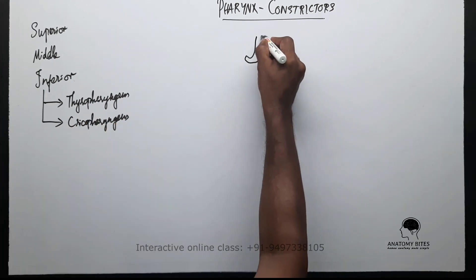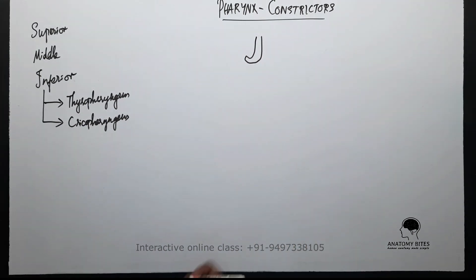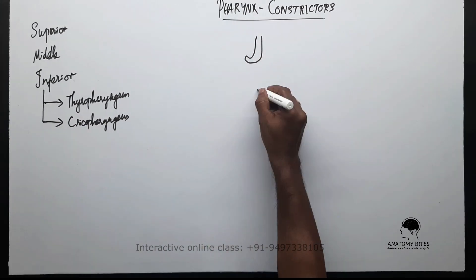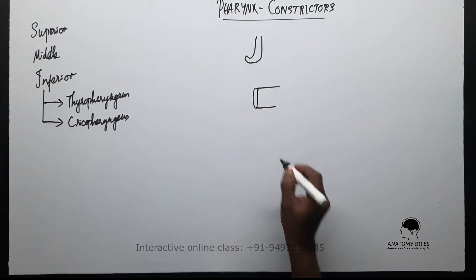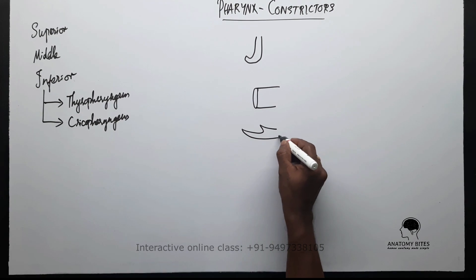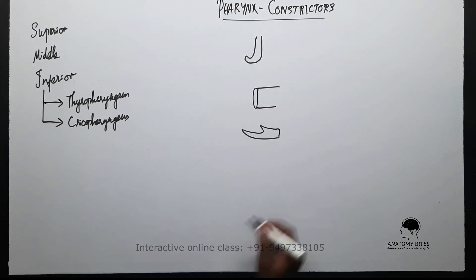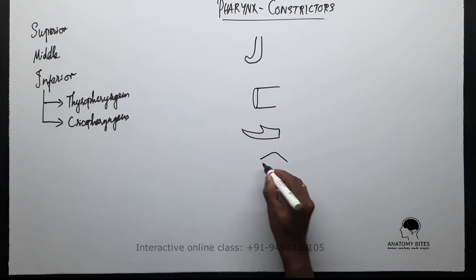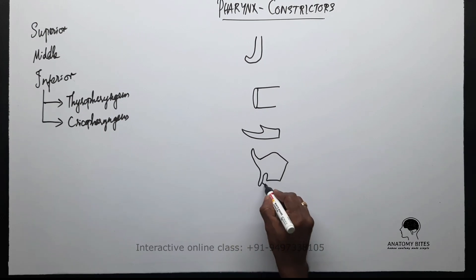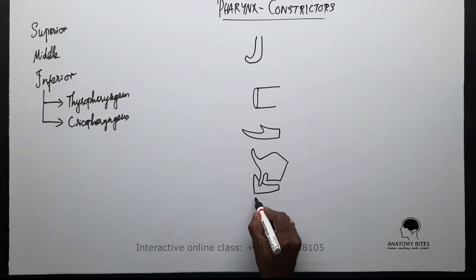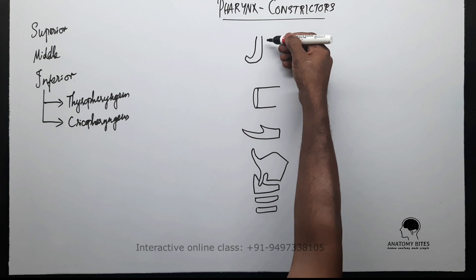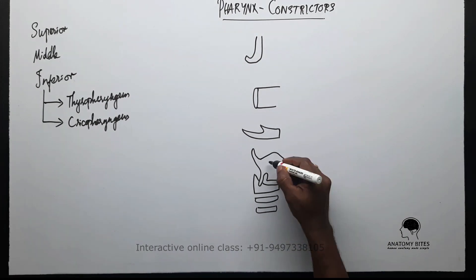This is the medial pterygoid plate and pterygoid hamulus, part of the mandible, the hyoid bone, the thyroid cartilage, the cricoid cartilage, and one or two tracheal rings. See, all these are drawn in a vertical line.